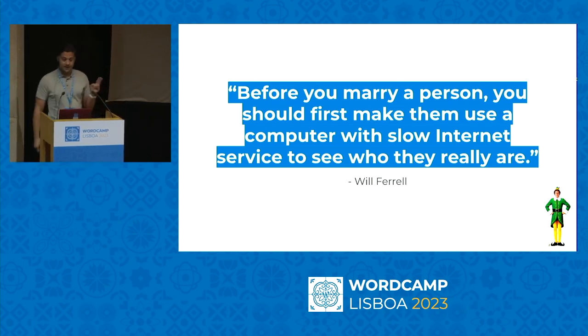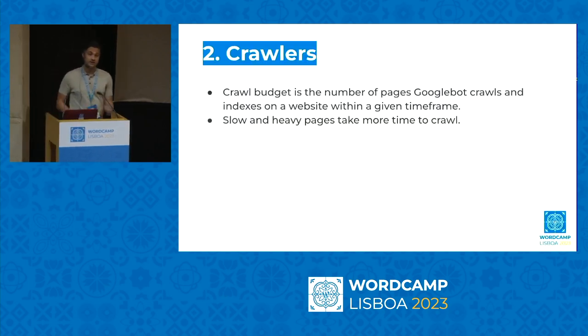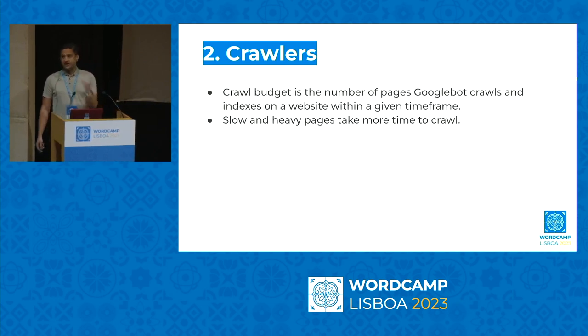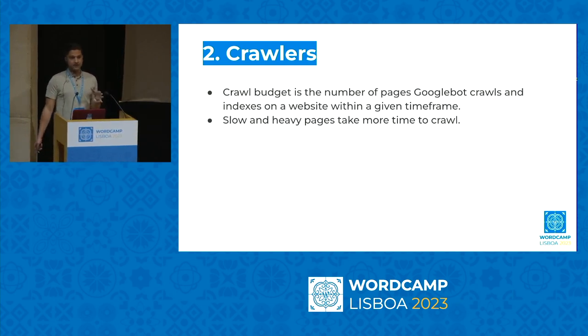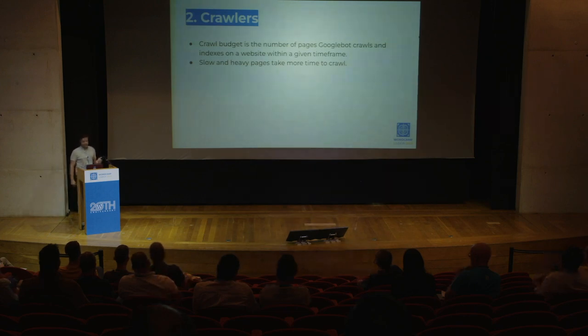The second reason is the non-human users of your website — crawlers, bots, everyone that needs to understand your website without being human. Google Bot is software running on thousands of computers that analyzes and crawls every single web page on the internet and creates the Google index. This will change with AI, but currently Google Bot is the one that needs to process every single page and put it in the index. Slow and heavy pages simply take more time to crawl.